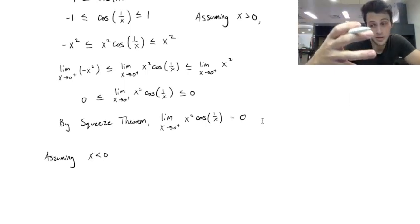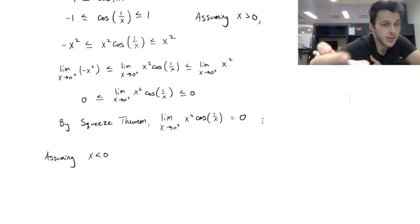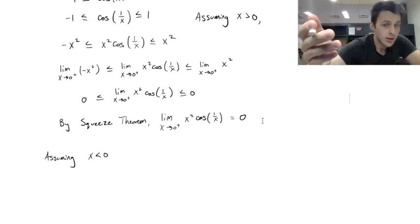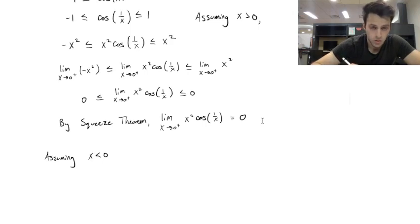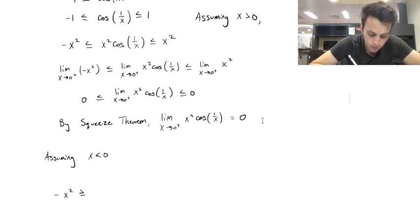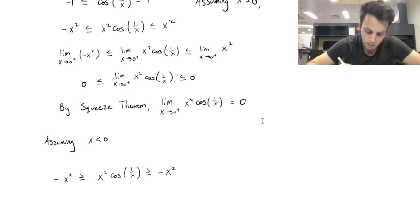So this will be minus x squared greater than or equal to, and then we've got x squared cosine 1 over x, and this is positive x squared.